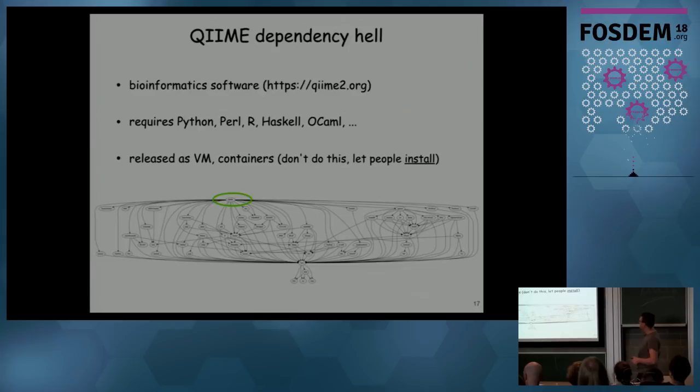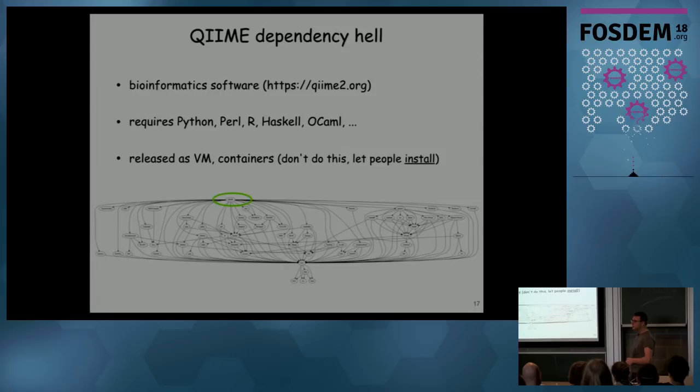QIIME is an example from bioinformatics. This is the dependency graph: QIIME is what you want at the top, the compiler and some basics are underneath, and then everything else is a whole bunch of stuff you need — Python, Perl, R, Haskell, OCaml. You need all of these to use QIIME to its full extent. Some are optional, but if you want to use everything, you need to install all of this. They do release QIIME as a VM and as containers because they want people to use their software — don't do this, let them install it.